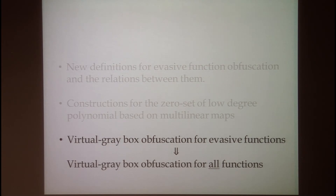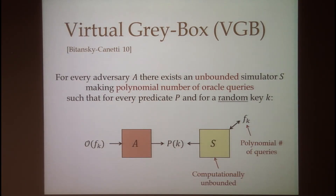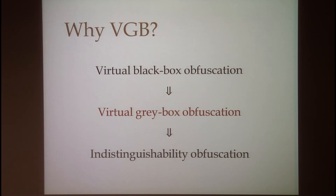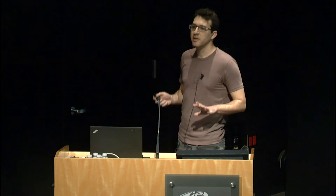Now let me tell you about connections between evasive functions and virtual gray box obfuscation. Virtual gray box, or VGB, was introduced by Bitansky and Canetti and is defined similarly to virtual black box, except the simulator is computationally unbounded but restricted to making only a polynomial number of queries to the oracle. VGB is somewhere between virtual black box and indistinguishability obfuscation. Bitansky and Canetti show you can get composable VGB obfuscators for point functions from a strong variant of the DDH assumption — something we don't know how to do with VBB — and these obfuscators found many applications.